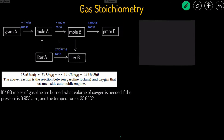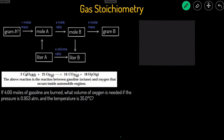In gas stoichiometry, the only thing that's new is we now have a conversion between the moles of a gas and the liters of gas. So liters get involved in the stoichiometry process, and this is the entire flowchart of gas stoichiometry — we're just incorporating liters into it. Substance A is what we're given, and substance B is what we're trying to solve for. This will make a lot more sense when we look at the examples.